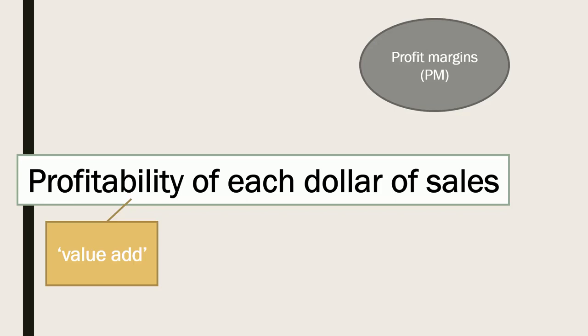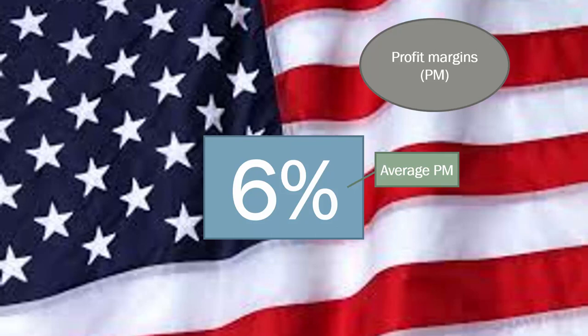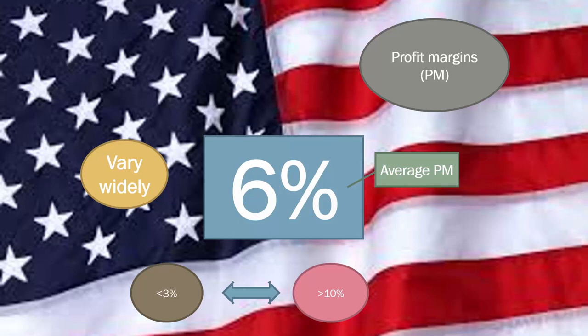The average profit margin in the U.S. is about six percent, but can vary widely between industries, between companies within industries, and over time depending on where we are in the economic cycle. Many firms can be expected to have profit margins of more than about ten percent or less than about three percent.